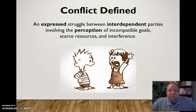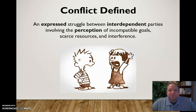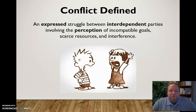Conflict is an expressed struggle between interdependent parties. What that means is that these two parties are connected in some way — what one does affects the other in the relationship. It's not between two strangers, really. You can have disagreements and fight with strangers, but that's not an interpersonal conflict. Interpersonal conflict exists within the context of a relationship between two interdependent parties whose actions affect one another.